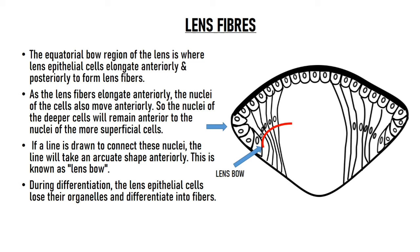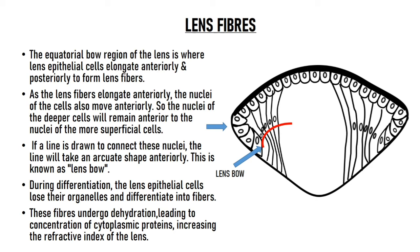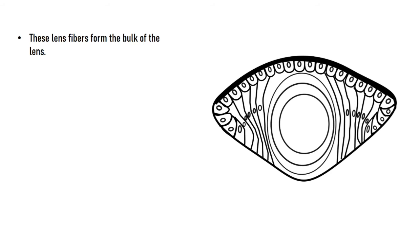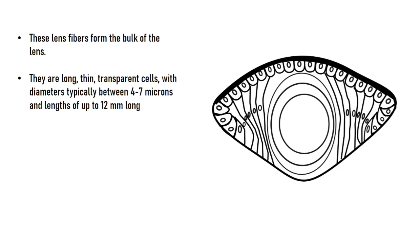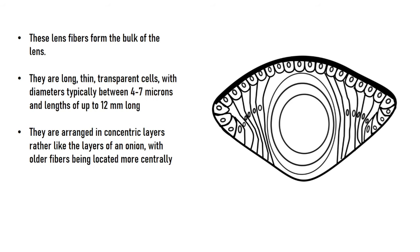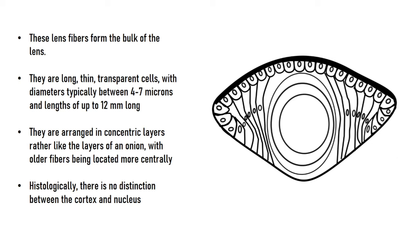During differentiation, lens epithelial cells lose all their organelles and form lens fibers. These fibers undergo dehydration, leading to concentration of cytoplasmic proteins, which contributes to the refractive properties of the lens. Lens fibers form the bulk of the lens; they are long, transparent cells typically 4 to 7 microns in diameter and up to 12 millimeters long, arranged in concentric layers like an onion. Older fibers are located centrally and the youngest most superficially. The oldest fibers form the lens nucleus, surrounded by the epi-nucleus, and superficial to that is the lens cortex.